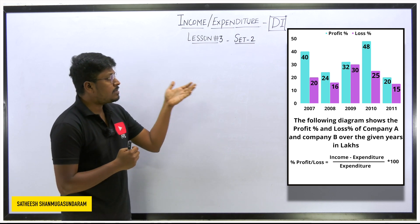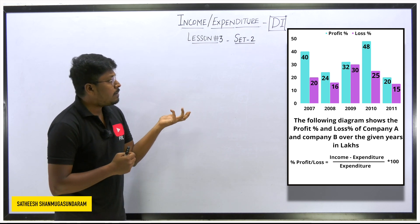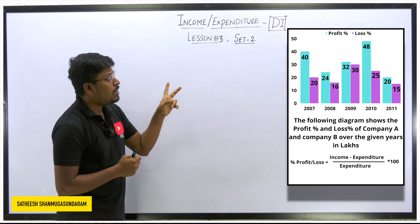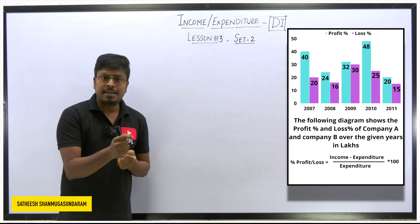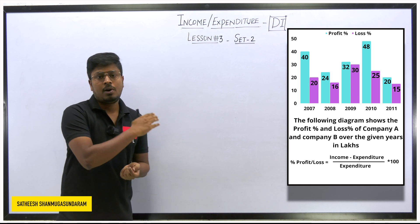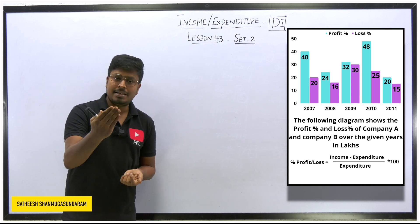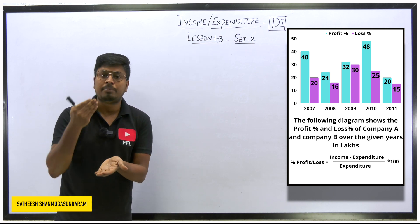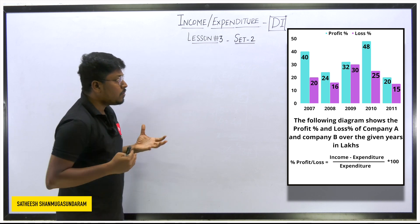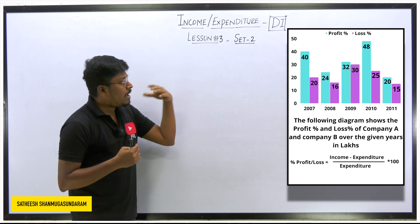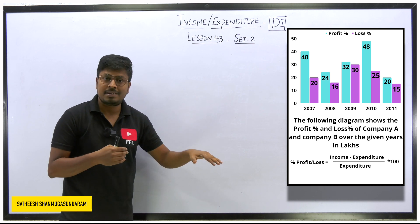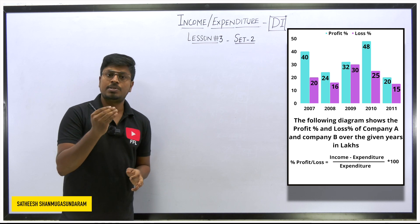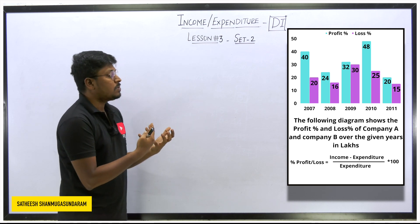In this set number two, income value and expenditure value have not been given. Instead, two values are given: profit percentage of company A and profit percentage of company B over five years. So in the previous set we learned how to find profit percentage from income and expenditure values, but here we will learn how to find income and expenditure from profit percentage and loss percentage.